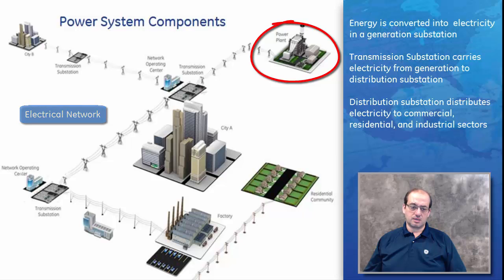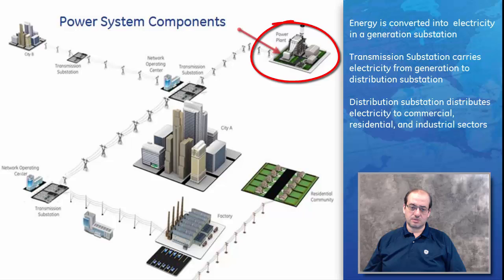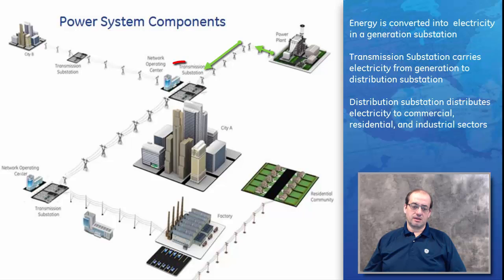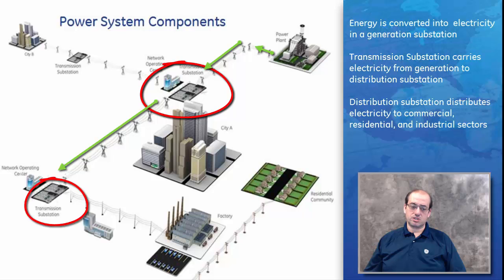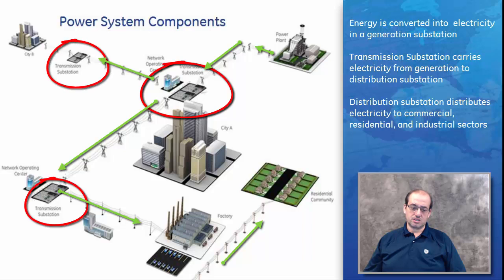The D20 resides in a substation in an electrical network. There is a generation substation, a transmission substation, and a distribution substation. The generation substation generates power from fuel. That power goes to a step-up transformer, which minimizes power loss during transmission over the power lines. It then reaches a transmission substation which has a switch yard that routes power to another transmission substation or a distribution substation.